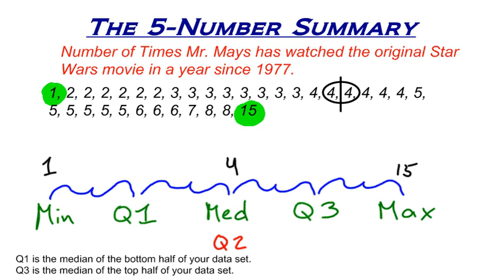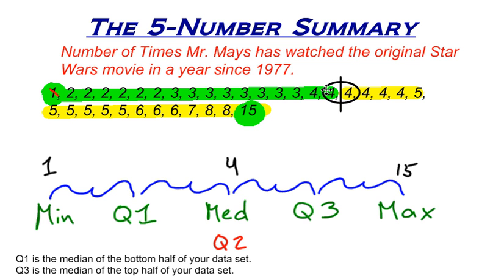I'm going to take the bottom half of my data set and highlight that in green. There's the bottom half. Then here's the top half — I do include the 4 since it was split down the middle. Now I find the median of the bottom half. There were 17 numbers, so I start marking off values on either end — 1 and 4, 2 and 4 — continuing to mark off values on either end in numerical order until I find the median of the bottom half. The median of the bottom half is 3. So that is my first quartile.